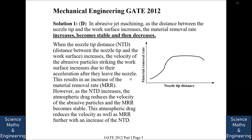The material removal rate first increases, then becomes stable, and then decreases. In abrasive jet machining, we have a slurry of abrasives that are hit to the workpiece. As the abrasives come through a nozzle and we increase the nozzle tip distance, the particles get more time and their velocity increases because acceleration is constant, so the abrasive particles strike at greater velocity and the material removal rate increases.